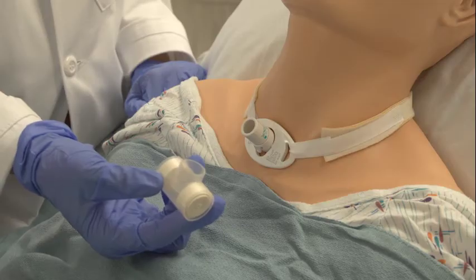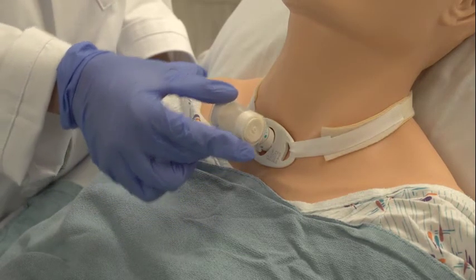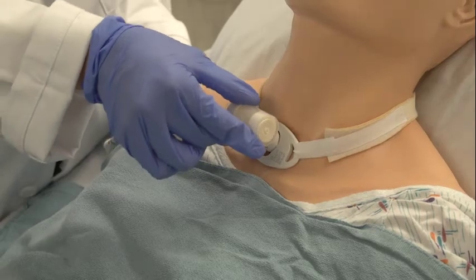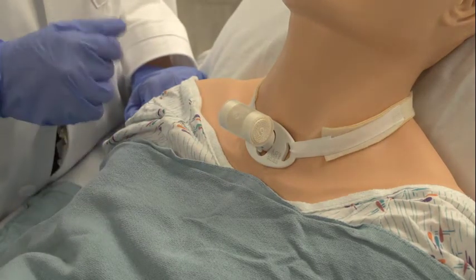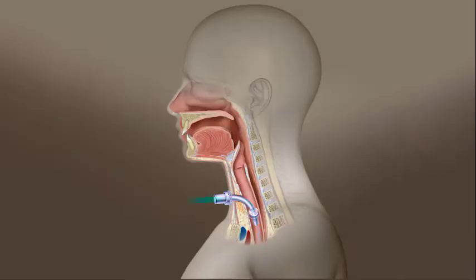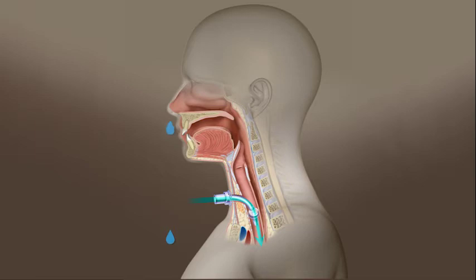The most common source of humidification is a high-humidity mist mask. However, there are alternatives including a heat and moisture exchange filter that can be placed on the trach tube. Also, as a result of air bypassing the nose, smell and taste are often impaired, and patients often experience a runny nose since nasal mucus is no longer easily drawn to the throat as it was before.